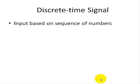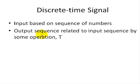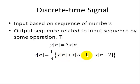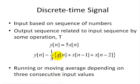Let's take a look at discrete time signals. We want to take an input, which is basically a sequence of numbers, and manipulate it such that we get an output sequence with desirable properties — for example, getting rid of noise. The output sequence is related to the input sequence by some operation T. For example, T could be multiplying the input by 5, or taking a combination of the present and past two inputs and averaging them to form a sliding window or moving average filter. X represents the input, Y represents the output, and N represents some integer index of the sequence.